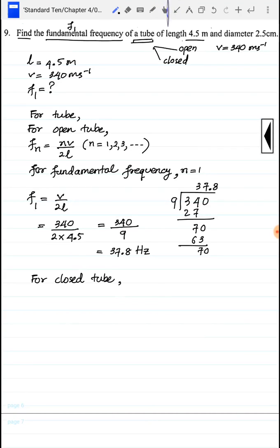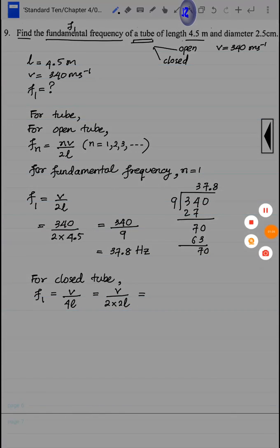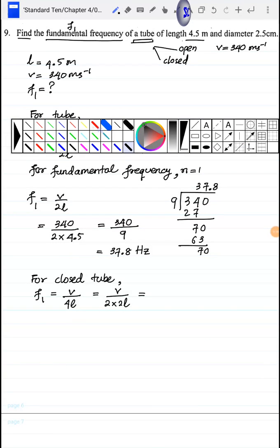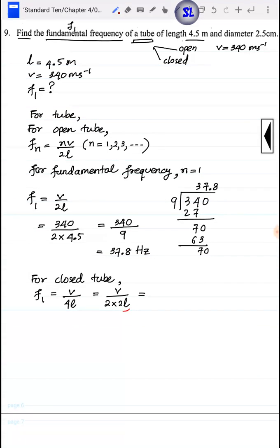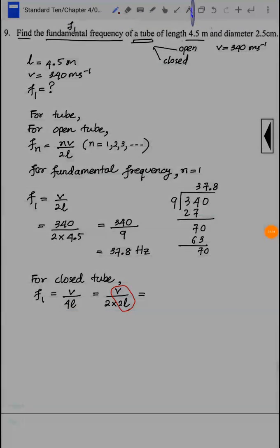For closed tube, the general formula is f_1 equal to v by 4L. So we have v divided by 4 times 2 into L.